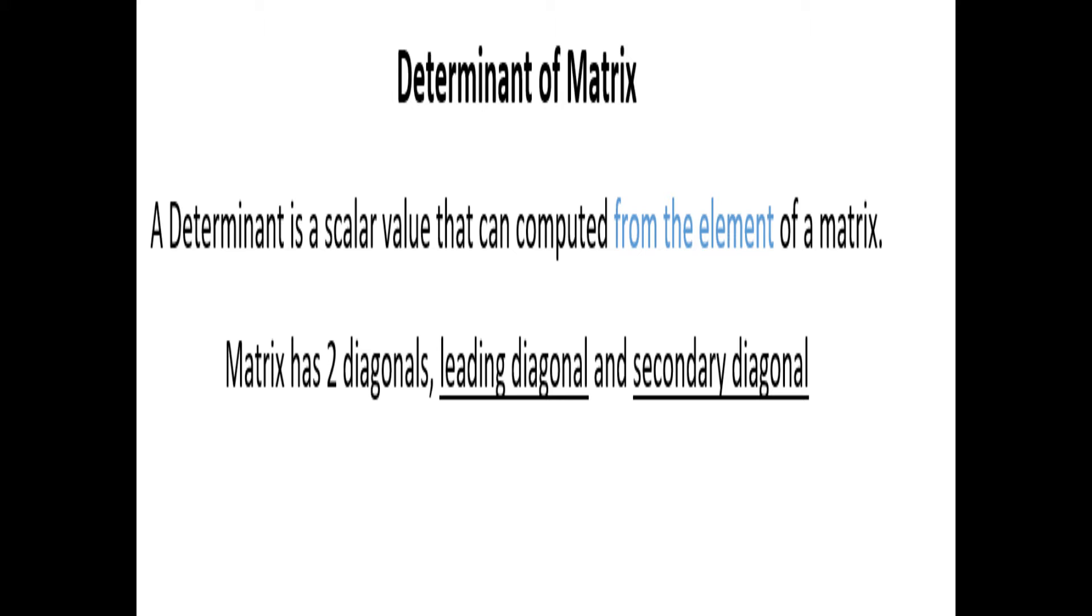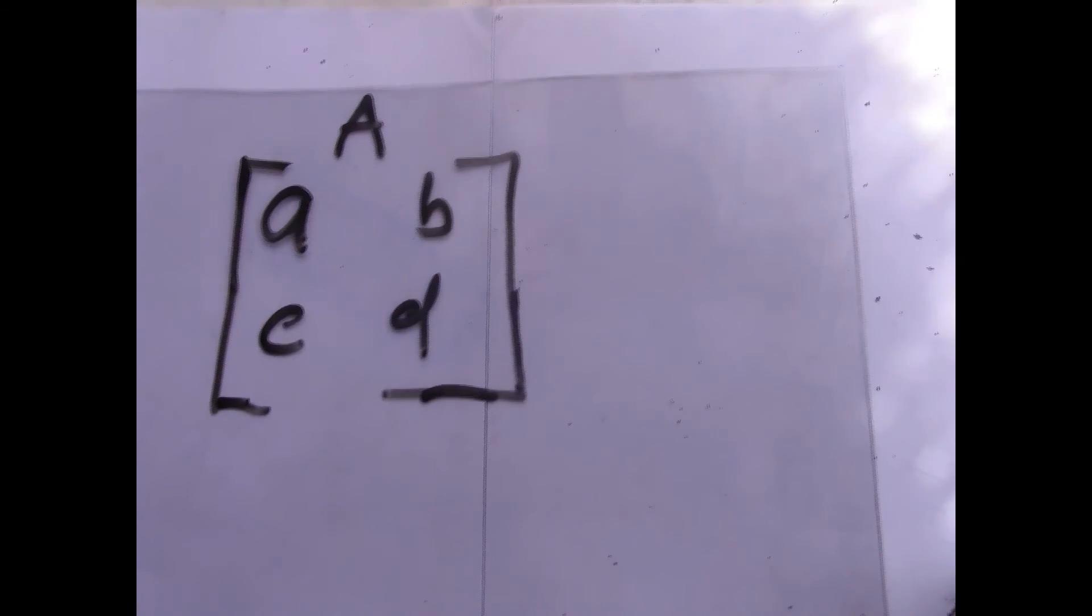So also there's something you need to know today is that a matrix has two diagonals. One of the diagonals is called the leading diagonal and the other one is the secondary diagonal. Before you move on to how to calculate or how to find a determinant of a matrix, you have to know what is a leading diagonal and a secondary diagonal.